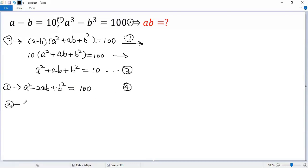3 minus 4. We get a squared minus a squared, cancelled. ab minus negative 2ab, so we get 3ab. b squared minus b squared, cancelled. 10 minus 100 equals negative 90. Now, both sides divided by 3, so we get ab equals negative 30.